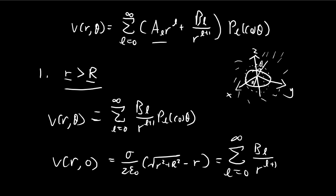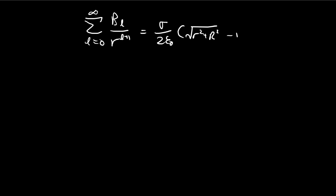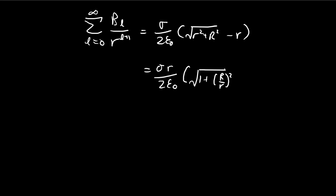To summarize, we know our simplified potential expression must equal the expression from the previous chapter. Let's factor out small r from the expression: we get 1 plus (r/R)² minus 1, pulled out appropriately, so we can apply a Taylor series expansion.